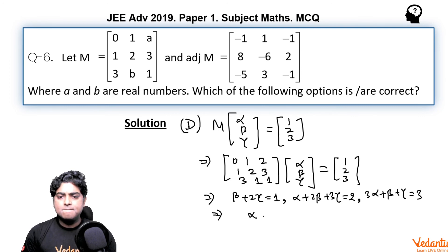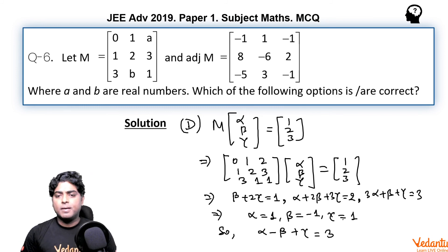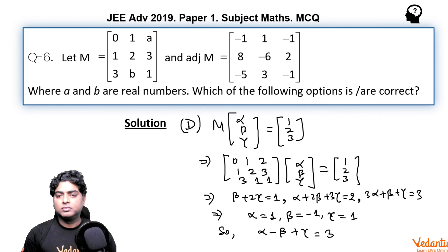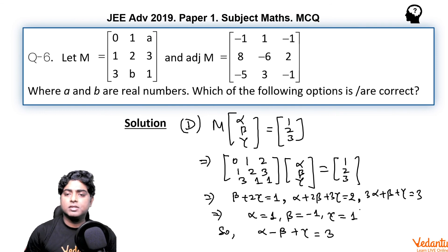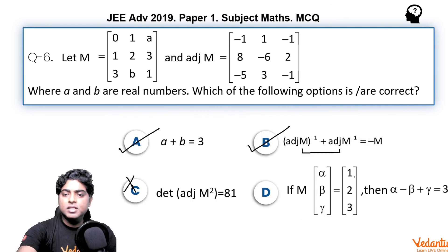Solving those linear equations gives α = 1, β = −1, γ = 1. You can verify these values satisfy all three equations. Therefore, α − β + γ = 1 − (−1) + 1 = 3, which matches the option. So option D is also correct.